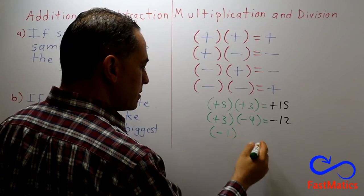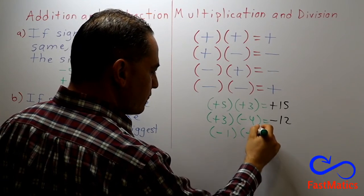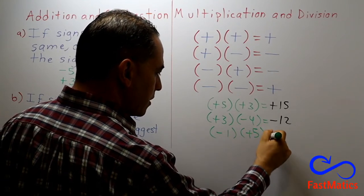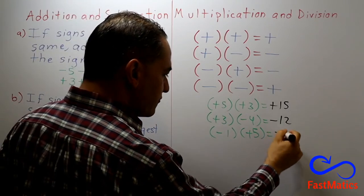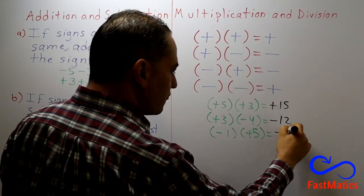Another example. Negative one times positive five equals negative times positive, negative. One times five, five.